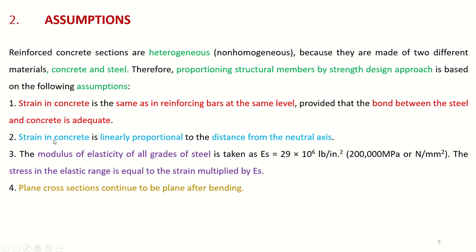Assumption 2: Strain in concrete is linearly proportional to the distance from the neutral axis. Assumption 3: The elastic modulus of all grades of steel is taken as 29,000 ksi. Assumption 4: Stress in the elastic range is equal to the strain multiplied by the elastic modulus. Assumption 5: Plane cross-sections continue to be plane after bending — the simple Euler beam model is considered, not the Timoshenko beam model.